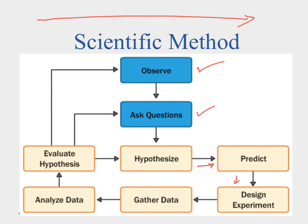We'll experiment with it, gather more data, analyze the data, and then we have to evaluate our hypothesis. If it's wrong, we come back. If it's right, then we continue — we'll ask further questions, make further observations, and the whole cycle continues. So the scientific method is more of a guide system to make sure that we're doing it the right way. It's not a simple series of steps.